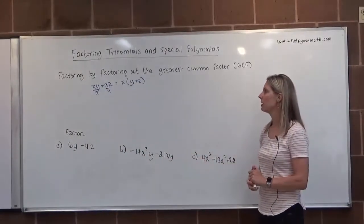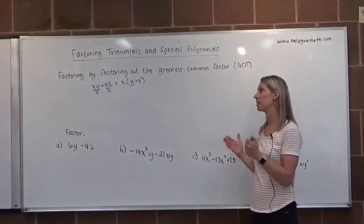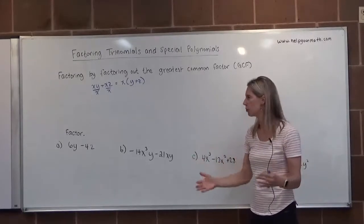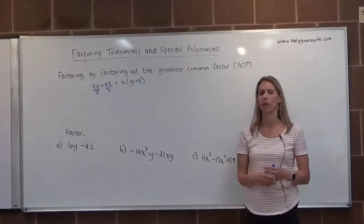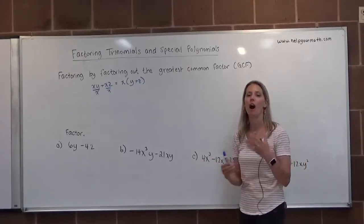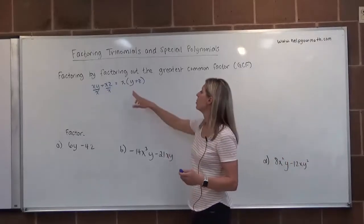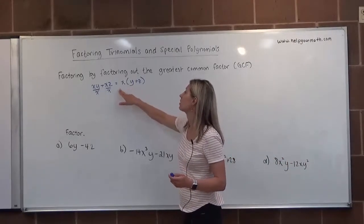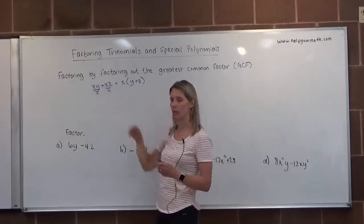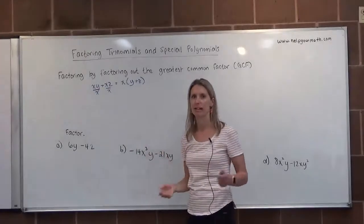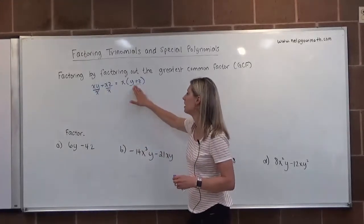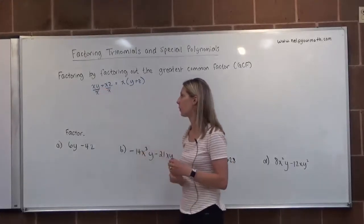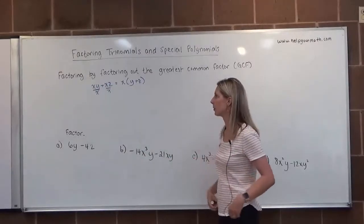When something is factored, it looks like you want to multiply it — you should want to use the distributive property on it. We can check this: if we distribute the x, we get back where we started. This is the factored form, and xy plus xz is called the simplified form.